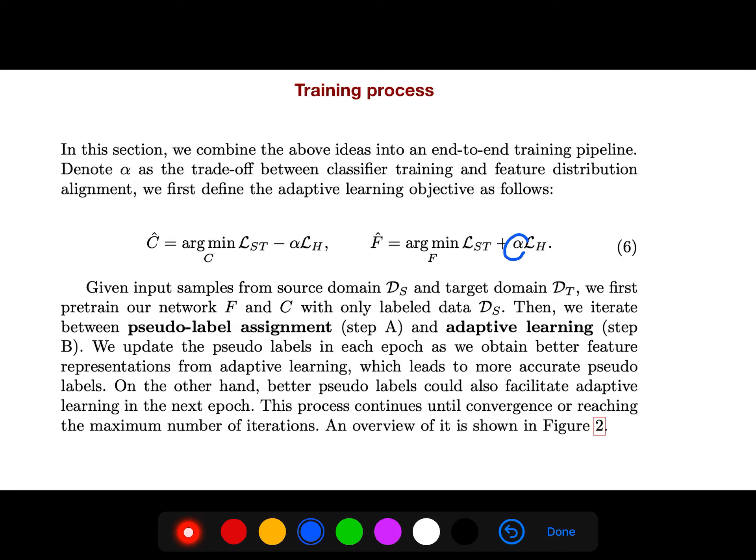Alpha here, you see alpha here, is a trade-off between classified training and feature distribution alignment. And we first define the adaptive learning objective. So we iterate between pseudo-label alignment and adaptive learning.